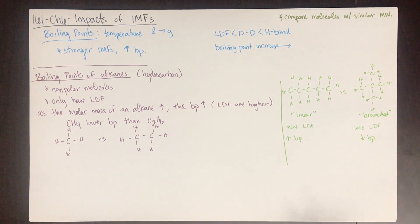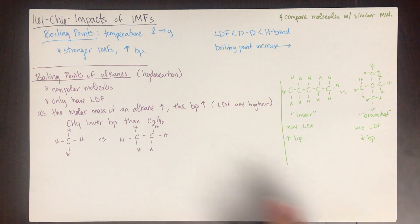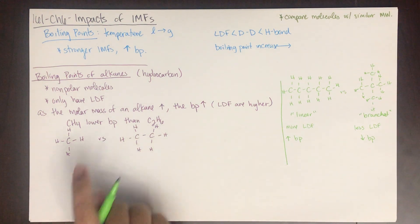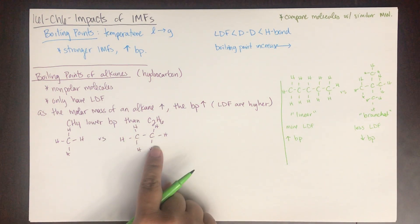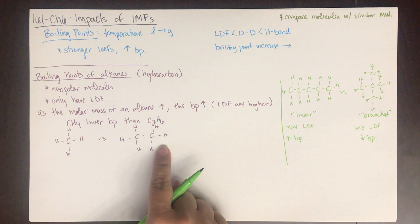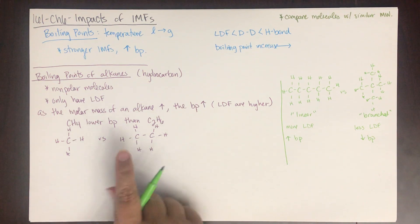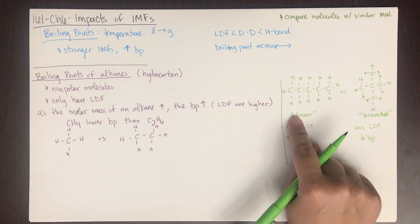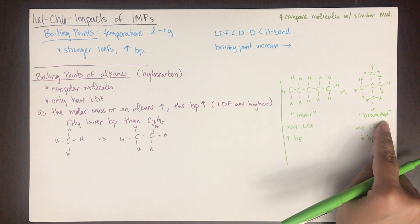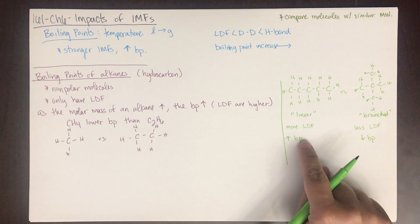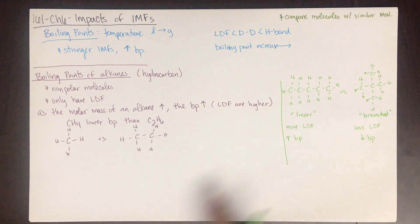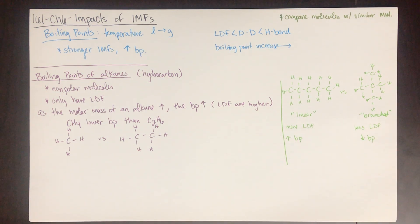So to summarize alkane boiling points: the larger the molar mass, the higher the boiling point. A more linear structure is more spread out and has a higher boiling point, while a more branched structure is less spread out and has a lower boiling point.